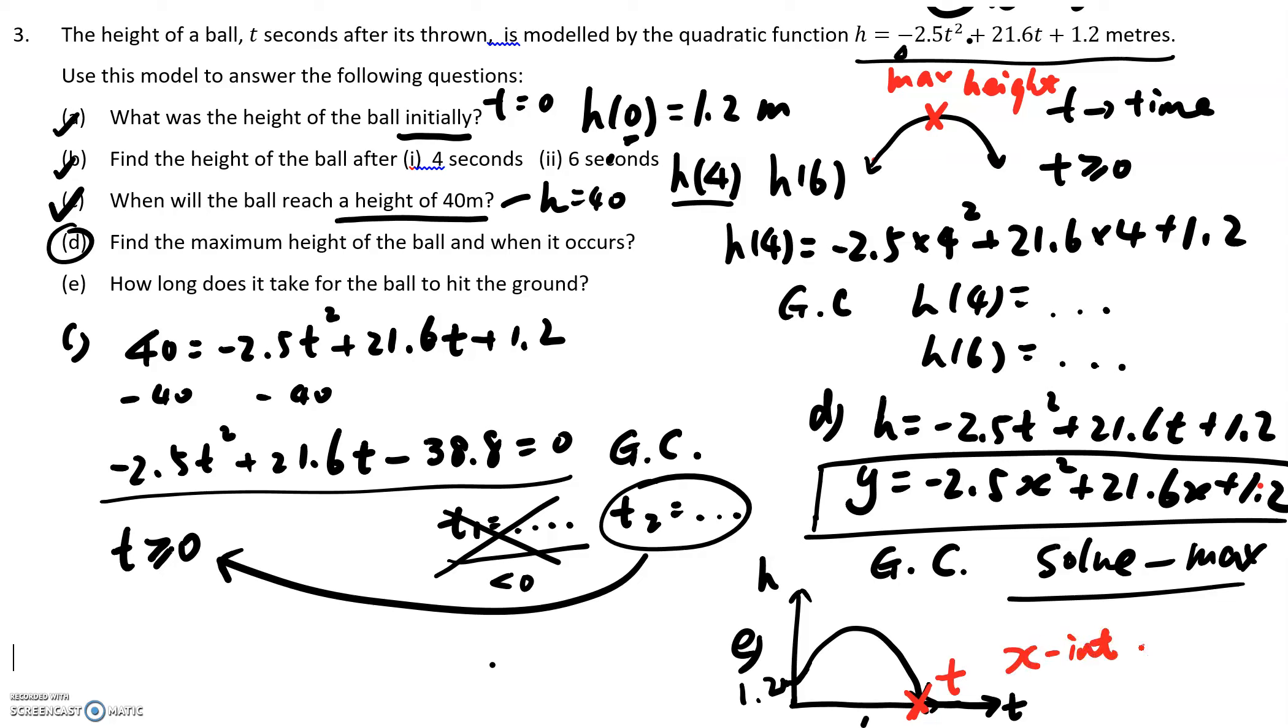So this x-intercept, this is how long does it take for the ball to hit the ground because it flies from here, t equals 0, all the way to here and then it reaches the ground again because the ground level is 0. Which I'm also going to show you how to use the graphic calculator to actually calculate it. I'm going to show you in another video. Thank you.